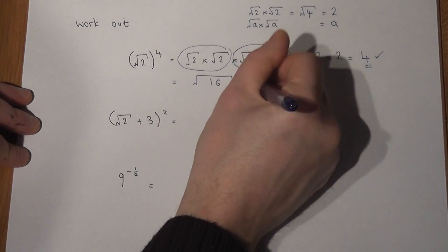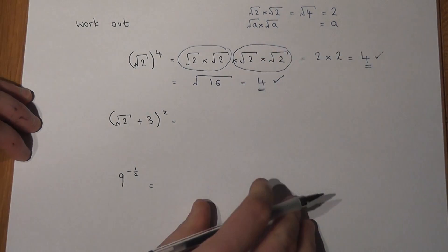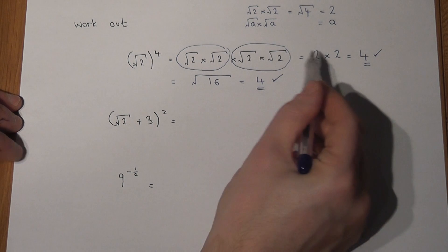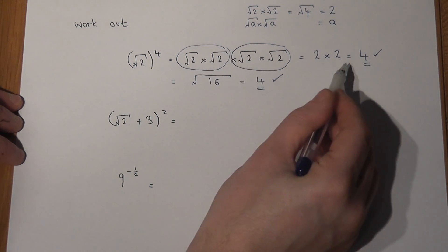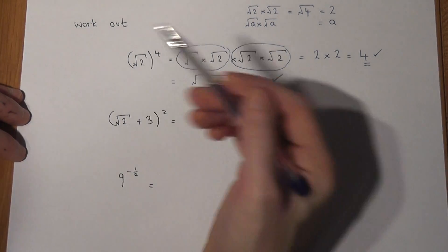But again, root of 16 just equals 4, so it still leads to the same answer. Again, this way tends to lead to smaller numbers in your calculations. This way can lead to larger calculations, which can be less easy to work out.